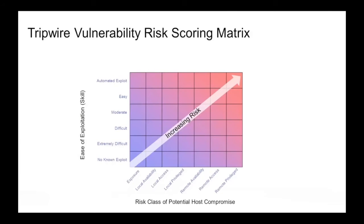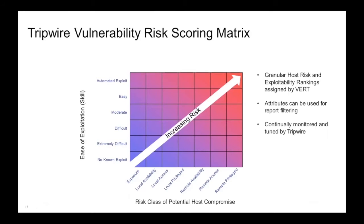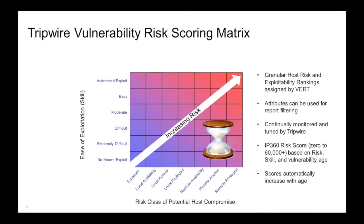How Tripwire IP360 derives risk scores is important because it allows you to analyze risk in the context of your unique environment and business. It assigns a risk class and skill level to each vulnerability. These attributes are assigned by the Tripwire vulnerability and exposure research team and can be used for selecting subsets of vulnerabilities for reporting purposes. The risk score combines the risk, the skill, and the age of the vulnerability automatically, so older vulnerabilities have higher risk scores.